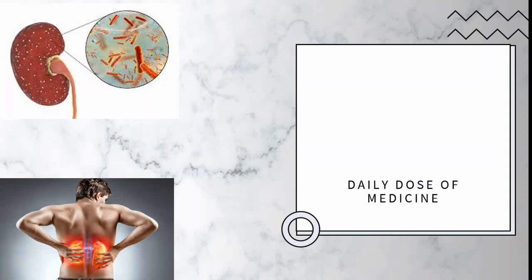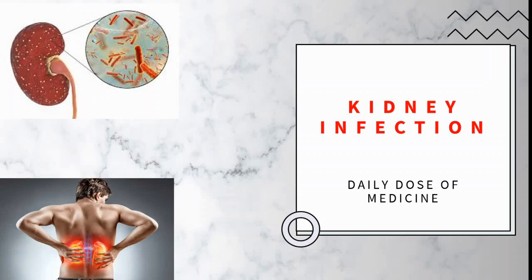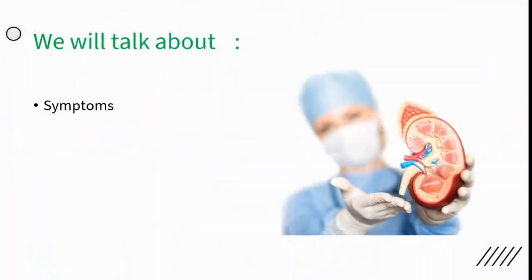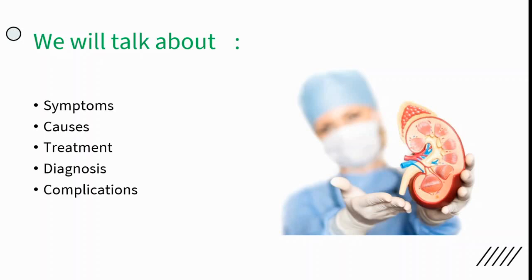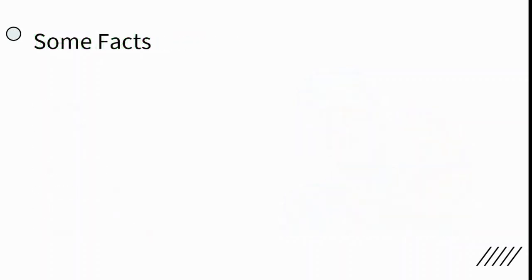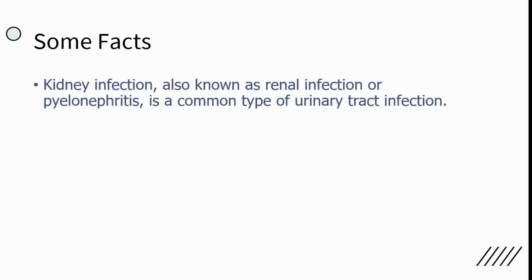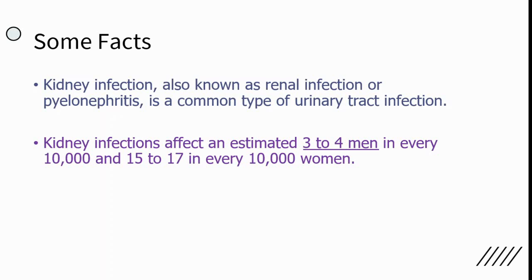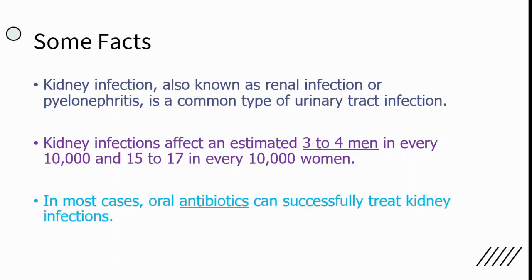Hello, this is your daily dose of medicine. In today's video we are going to talk about kidney infections — symptoms, causes, treatment, diagnosis, complications, prevention, and home remedies. Some facts: kidney infection, also known as pyelonephritis, is a common type of urinary tract infection. It affects an estimated 3 to 4 men in every 10,000 men and 15 to 17 in every 10,000 women. In most cases, oral antibiotics can successfully treat these infections.